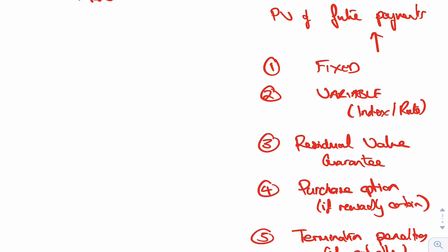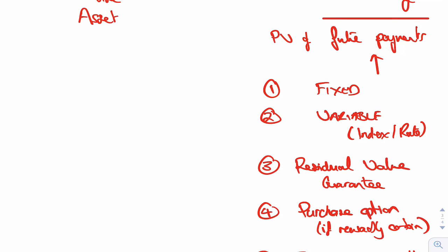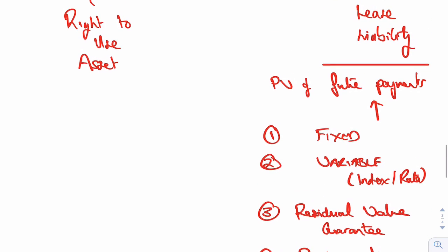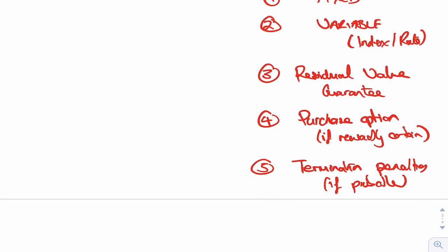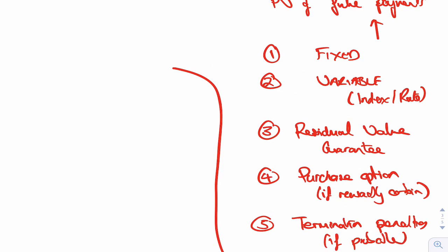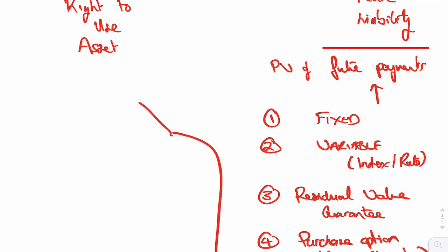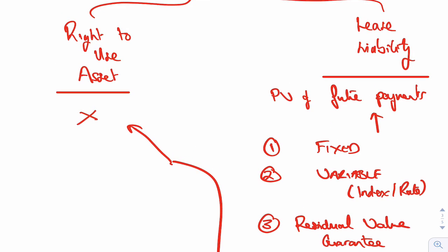So they're the five things that make up your future payments. You discount them down, and then you add all those together, discount them down, and then you take that figure there, and you add it on to your assets. That's the first line in your right to use assets, is whatever your lease liability plus that.